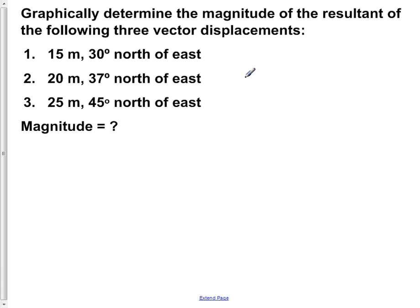Graphically determine the magnitude of the resultant of the following three vector displacements. One: 50 meters, 30 degrees north of east. Two: 20 meters, 37 degrees north of east. And three: 25 meters, 45 degrees north of east. What is its magnitude?